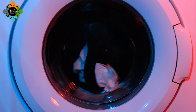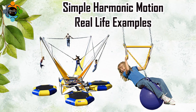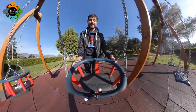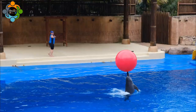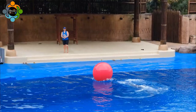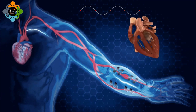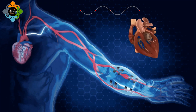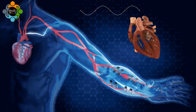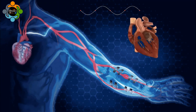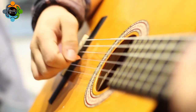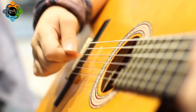Simple harmonic motion can be seen in various other daily activities. The movement of swings or even the bouncing of balls can be attributed to the concept of simple harmonic motion. The motion of the human heart can also be explained using simple harmonic motion, where the heart chambers follow a sinusoidal pattern to pump blood through the body.